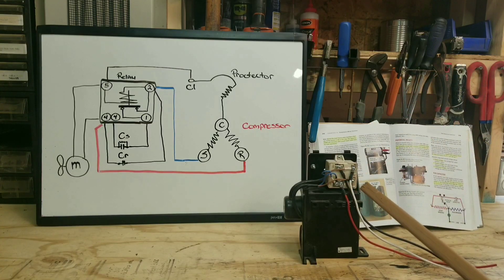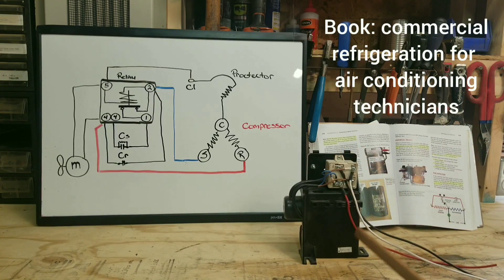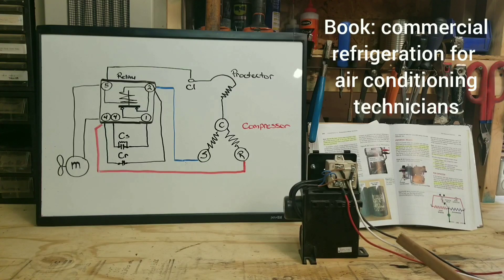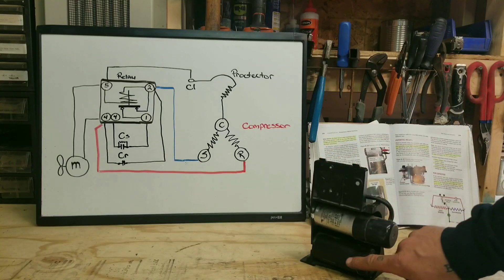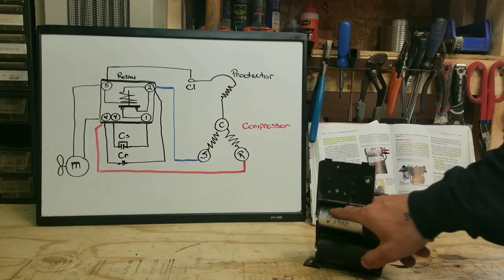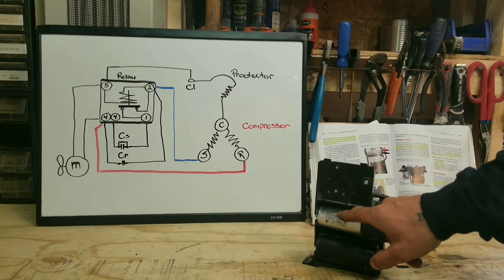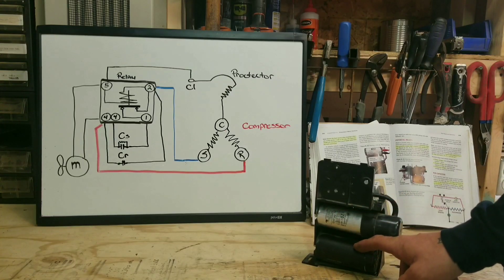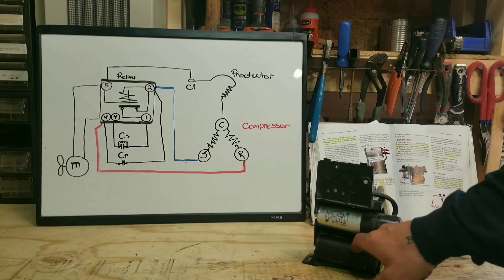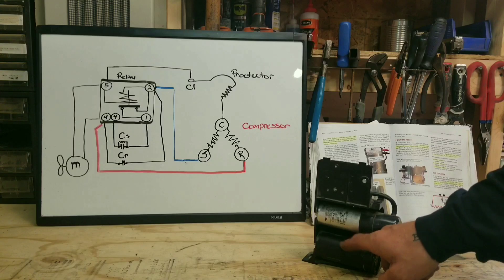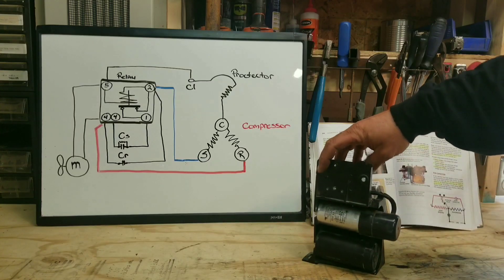Now right here is our potential relay in its natural habitat, if you will. Right here we have our run cap, our start cap. Quick tip: it's a run cap because it's got a metal housing—it's in the circuit longer. Start caps are not in the circuit as long and don't really require a metal housing because there's not much heat to dissipate, whereas these need to dissipate heat all the time.